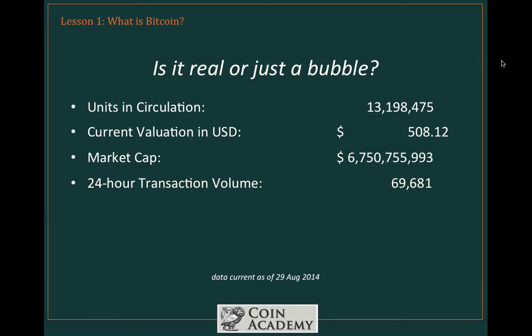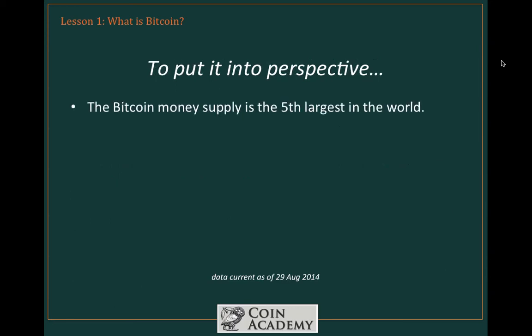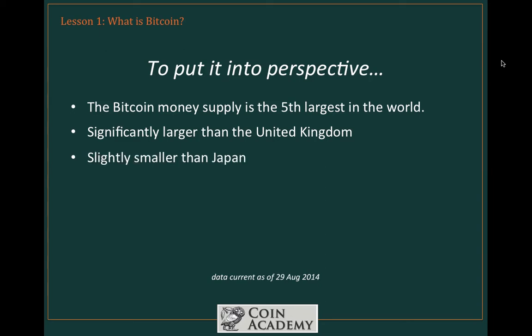Moreover, in the last 24 hours, 69,681 Bitcoins changed hands, meaning the 24-hour turnover was $35.4 million. Over the last 12 months, Bitcoin increased in value 370%. Over the last 24 months, it's just over 1,000%. To put this in perspective, the Bitcoin money supply is currently the fifth largest in the world — significantly larger than the sixth largest, the United Kingdom, and just slightly smaller than the fourth largest, Japan. At current growth rates, it was projected to be the third largest money supply by mid-2015. This refers to M1, not credit cards or other debt instruments.